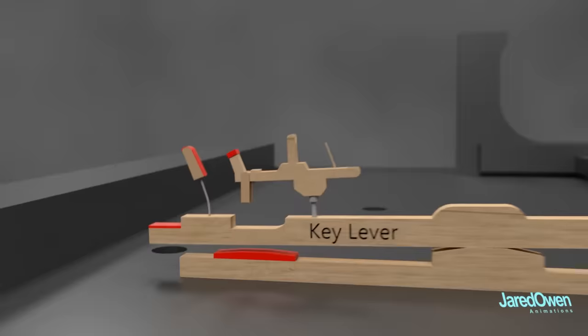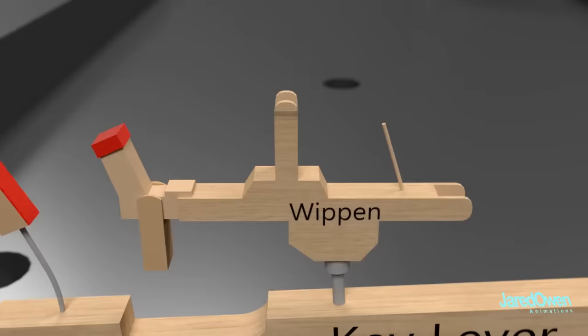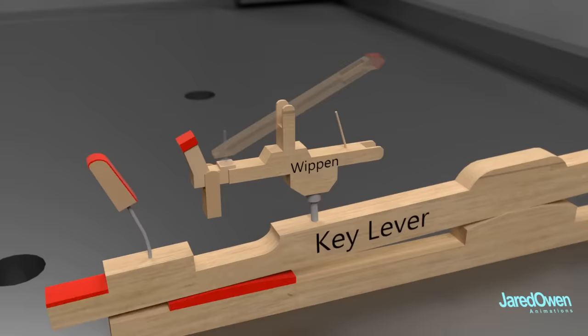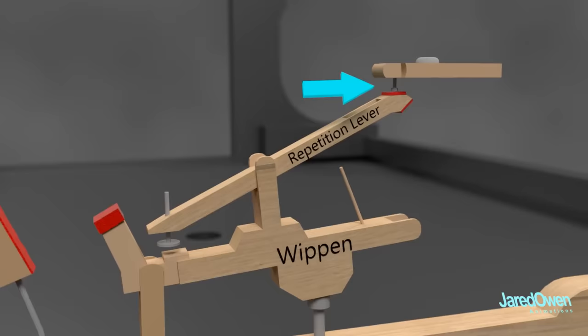This next piece is called the whippen. It's pinned in place at the end which allows it to rotate. Of course, it's not actually floating - it's attached to a long bar that spans the length of the piano. The repetition lever is pinned to the top of the whippen. The top of the lever hits this screw, causing it to rotate just slightly. There's another bar holding this piece in place.